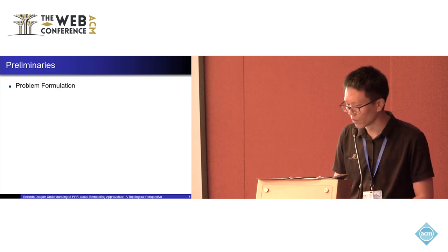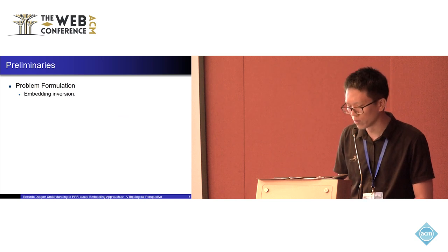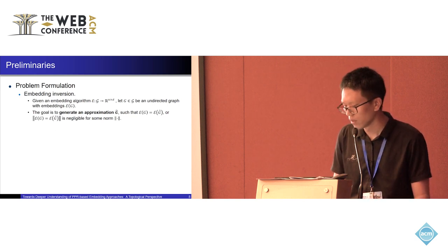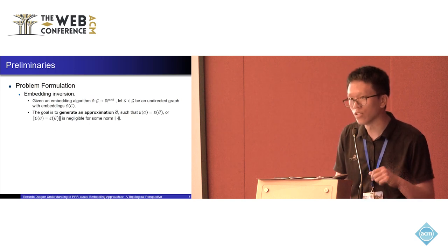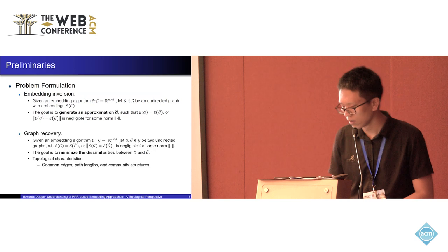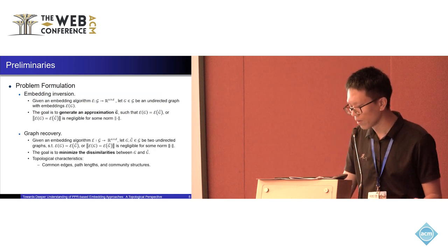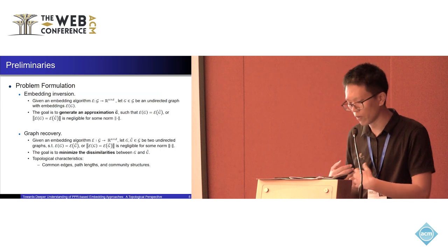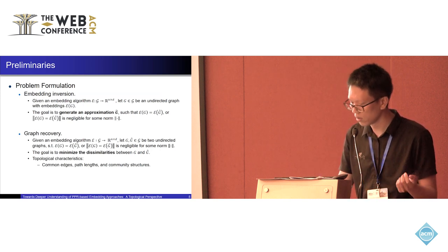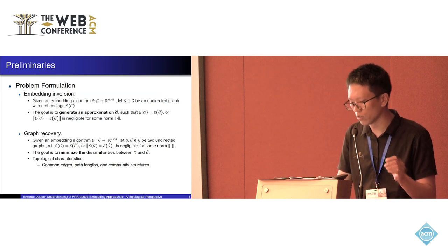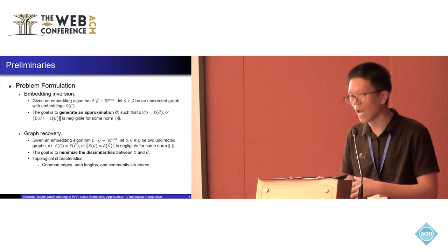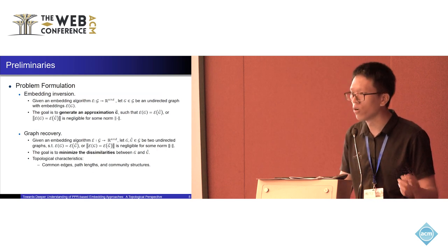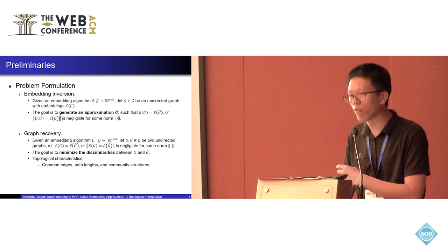To answer these questions, let me introduce the problems we study. The first problem is embedding inversion: given an undirected graph G with embedding EG, the goal is to generate an approximation G-hat from EG, recovering the graph topology. The second problem is graph recovery: given two graphs G and G-hat where embeddings EG and EG-hat are similar, the goal is to minimize dissimilarities between topological characteristics such as edges, path length, and community structures. We propose embedding inversion algorithms and evaluate them on the graph recovery task using different metrics.